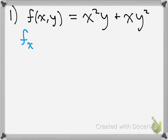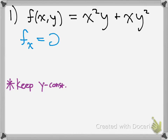We have partial f over partial x equals — the key is to keep y constant when doing the partial derivative with respect to x. So what you would get is 2xy — taking the derivative of x squared and treating y as the constant, you leave it y. Then the derivative of just x is 1, and since you treat y squared as a constant, you just leave it y squared.